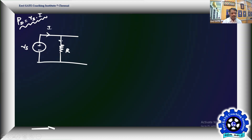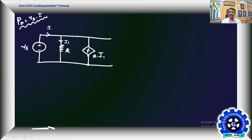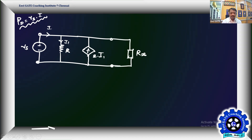The dependent current source is 2·i1, directed upward. We connect resistance Rx in parallel with the source. Since all elements are in parallel, I prefer to connect Rx across the output terminals. We can treat Rx as the load. The goal is to fix Rx such that minimum power is delivered by the source.